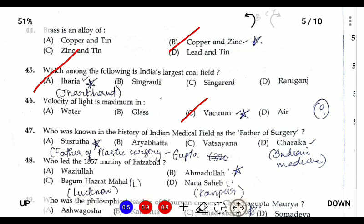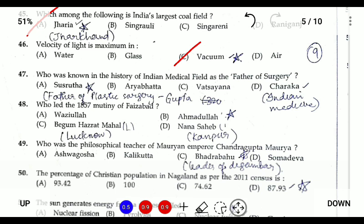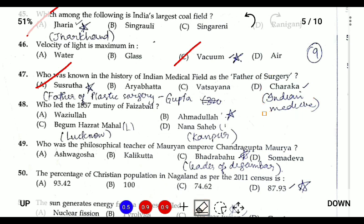Question forty-seven: who is known as the father of surgery in the history of Indian medicine? The answer is Sushruta, known as the father of plastic surgery or surgery. He lived during the Gupta period. Charaka is known as the father of Indian medicine.